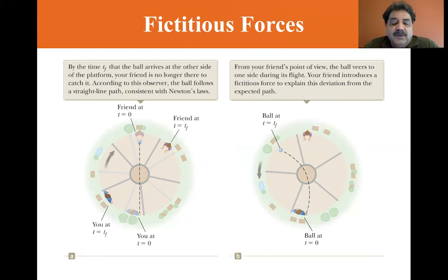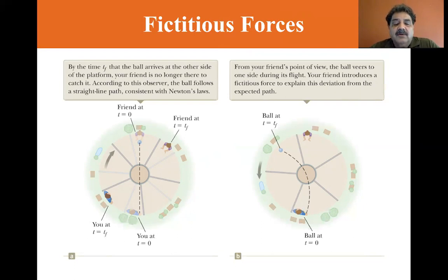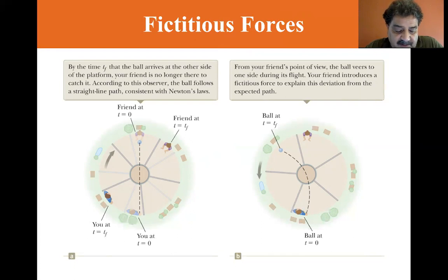These fictitious forces, though they're not real — it's the object's own inertia that wants to keep it going straight — can have real effects. The Coriolis force due to the rotation of the Earth is responsible for rotations of hurricanes, large-scale ocean currents, and also for the turning of Foucault pendulums.